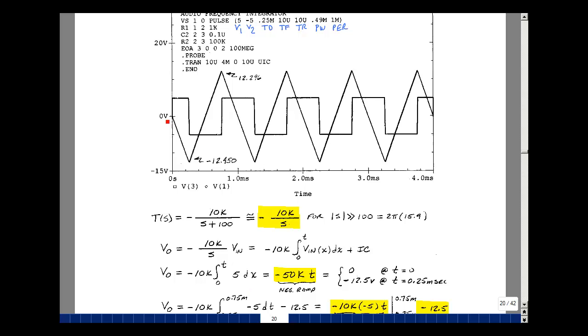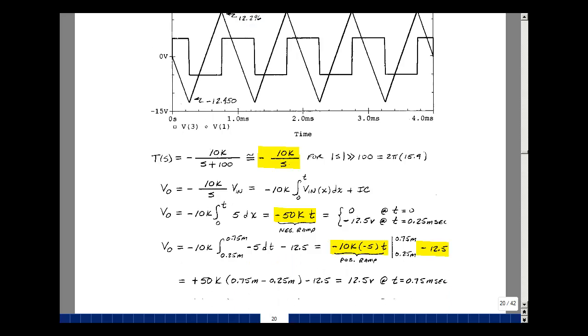So what happens next? Well, the input changes from plus 5 to minus 5. Integral now of minus 5 from a quarter to as long as this lasts, which is 3 quarters of a millisecond. Again, times the minus 10k. I do have an initial condition. That's where the last voltage ended. The voltage at the output is equal to minus 12.5 volts at t equals 0.25 milliseconds.